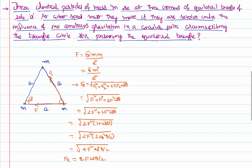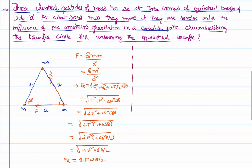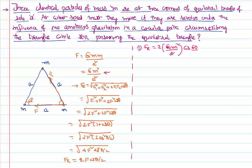Let's simplify to find the value. F_resultant = 2F·cos(θ/2). We know F = Gm²/a² and the angle θ = 60°, so θ/2 = 30°. Therefore F_resultant = 2·(Gm²/a²)·cos30°. Since cos30° = √3/2, the 2s cancel, giving F_resultant = √3·Gm²/a².